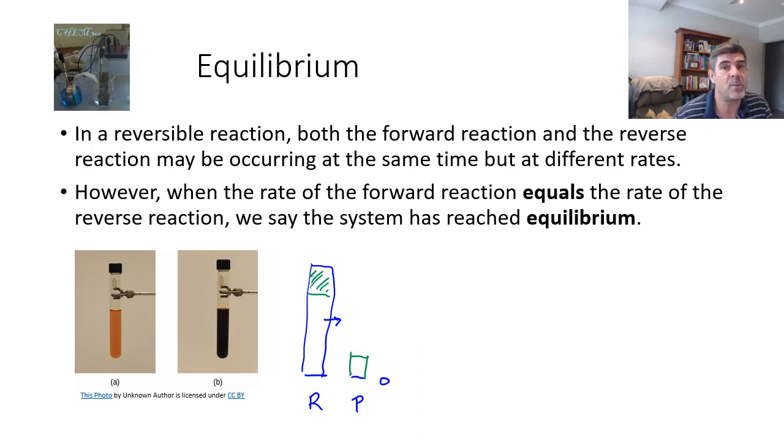In a reaction where we have a completion, what we would expect is for the whole of the reactant to end up at zero and for the product to go to whatever level it's going to go to, its maximum level.